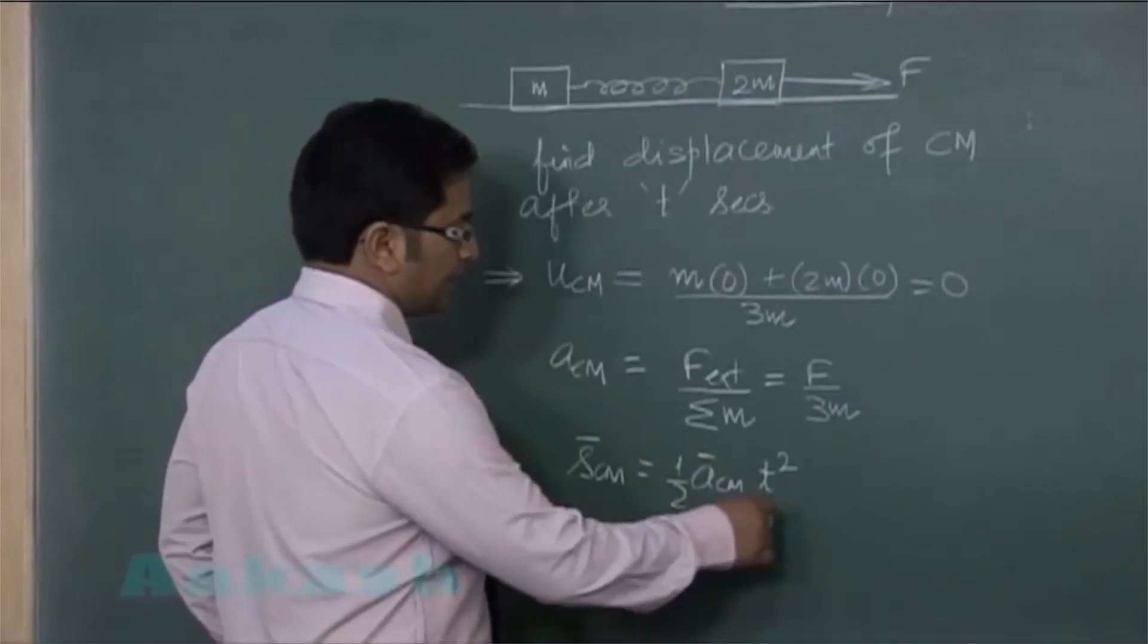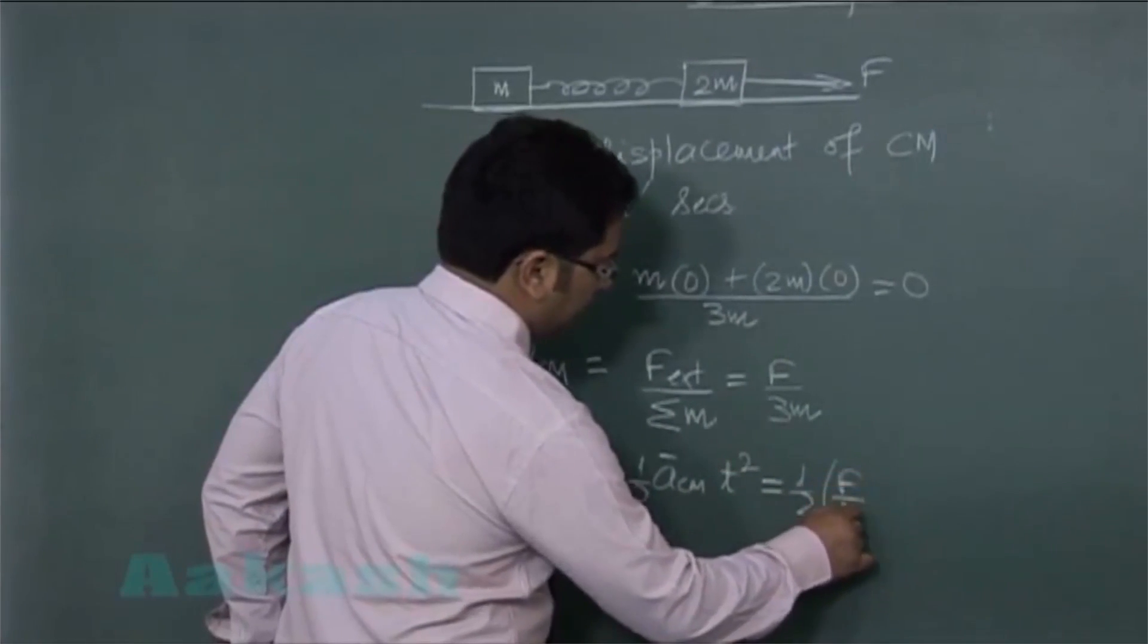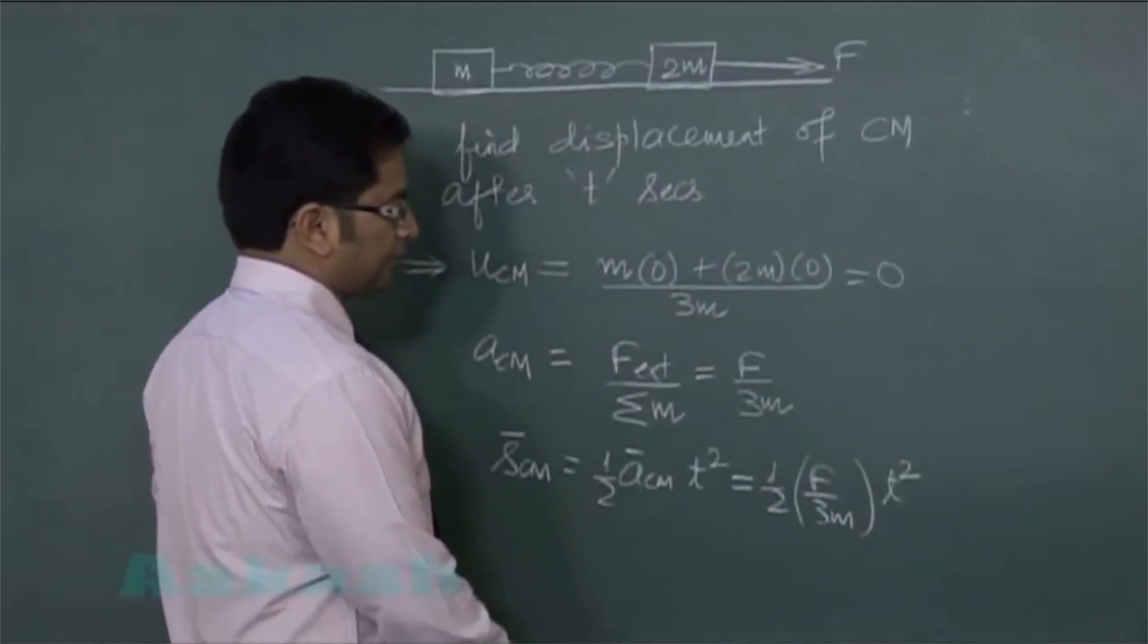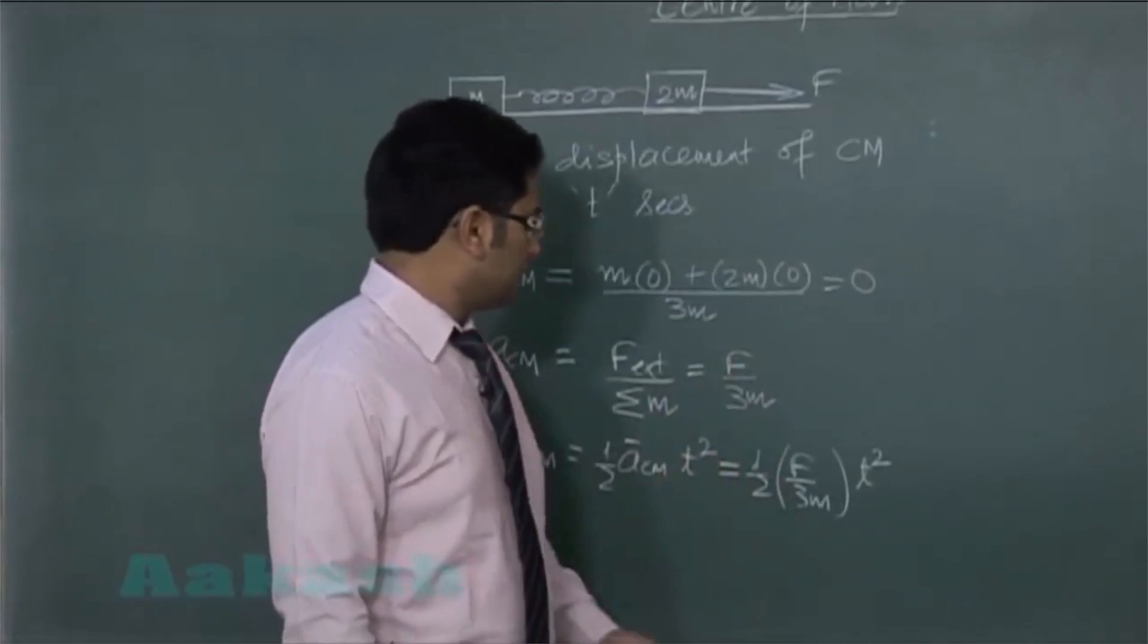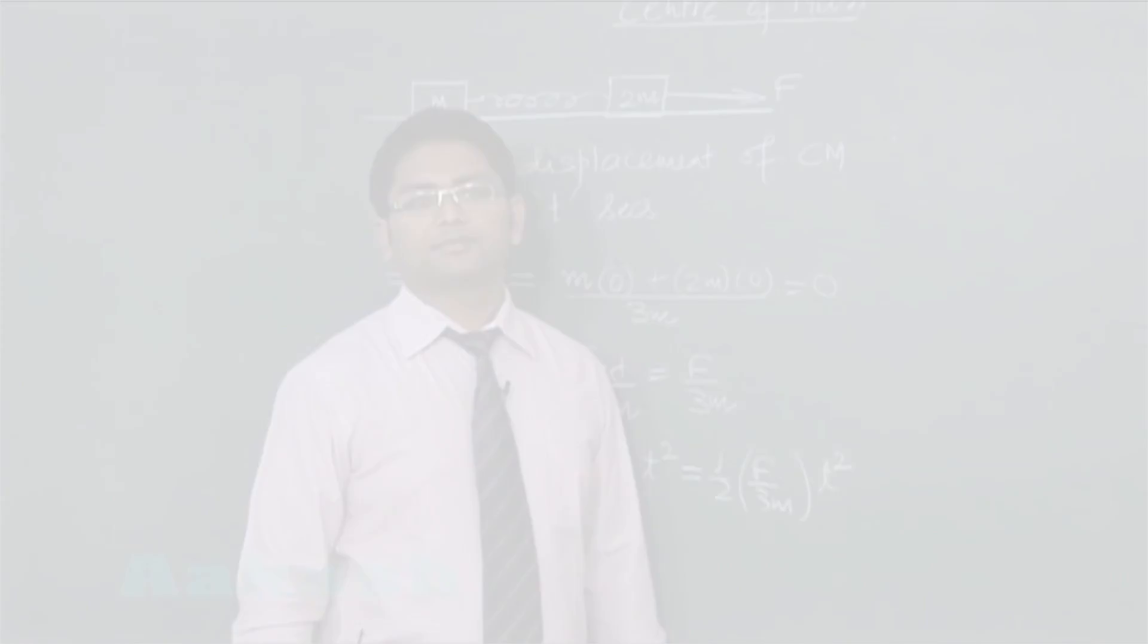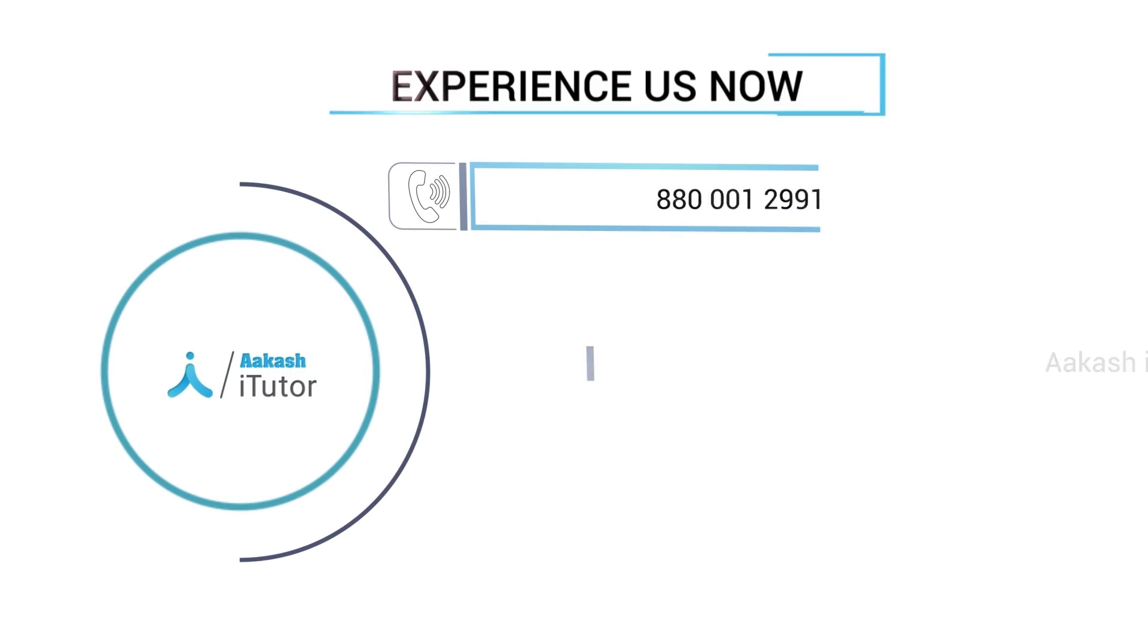And I can easily see this will be equals to one half f by 3m multiplied by t square. That's acceleration value and that gives the displacement of center of mass. That's all.